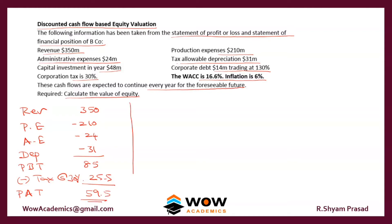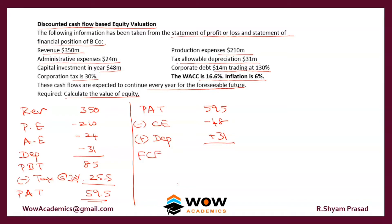Having found profit after tax, there are a few more steps. We deduct capital expenditure of 48, and add back the tax-allowable depreciation of 31, as per the format. This gives us a free cash flow of 42.5.